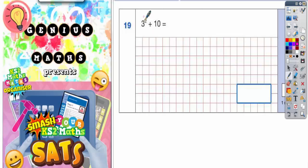Question number 19. We've got 3 squared and we've got to add on 10. Well, we need to remember what squaring a number means. So let's just run through a few examples.